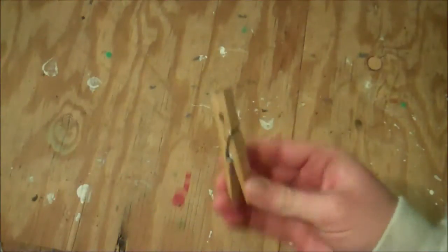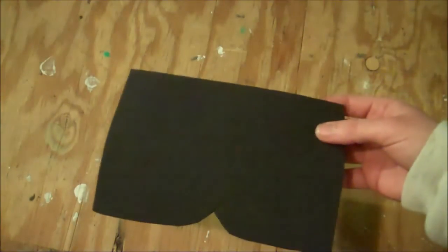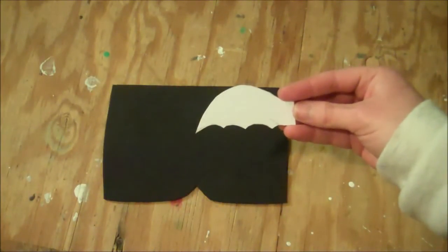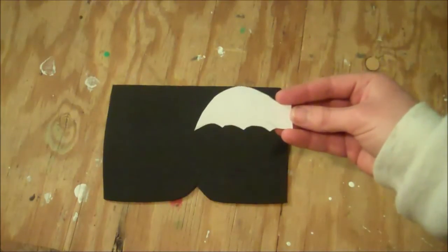Start by getting yourself an ordinary clothespin, some thin black craft foam or cardstock, and then find a batwing template on the internet and print it onto a piece of paper.